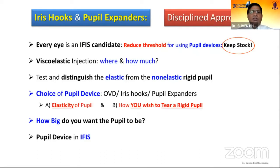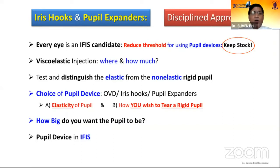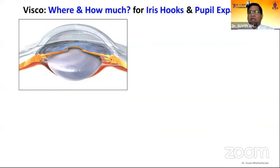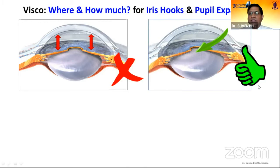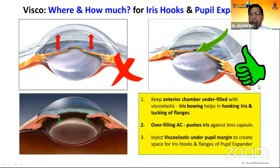A disciplined approach is needed: every eye is an IFIS candidate until proven otherwise, so reduce the threshold for using pupil devices and keep a stock. Important considerations include viscoelastic injection technique — where and how much — testing and distinguishing elastic from non-elastic rigid pupils, and the choice of pupil device based on pupil elasticity. A key question is how big you want the pupil to be, and which device is best suited for IFIS.